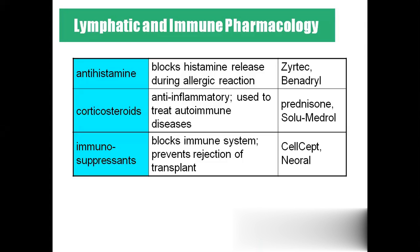Coming to the pharmacology: antihistamine. Usually the common drug given for allergic reactions is antihistamine. Histamine is the chemical released in our body during allergies, so if we block that histamine, the allergy will stop. Corticosteroids are given as an anti-inflammatory, used to treat autoimmune disease.